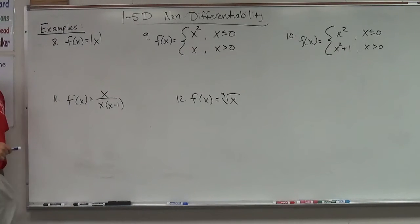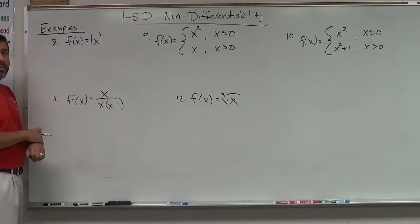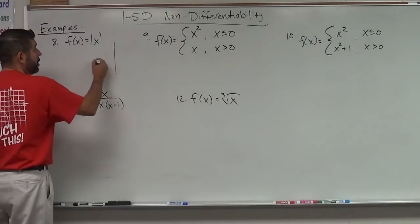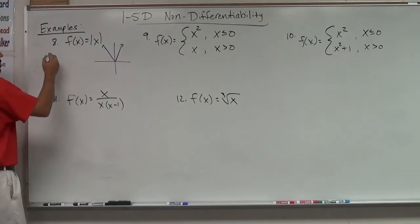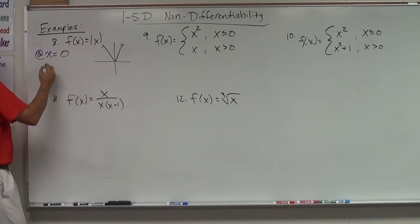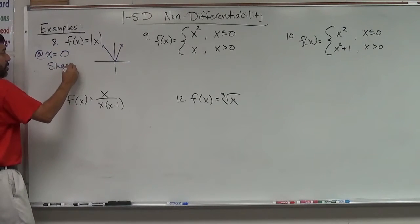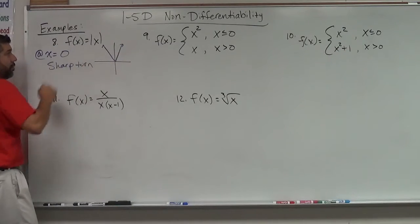The first example is the absolute value where we talked about we knew that's not differentiable. So the question is, why is this not differentiable? Well, we know that the absolute value looks like that. So where is that? That's at x equals 0. So it's not differentiable at x equals 0 because it has a sharp turn.